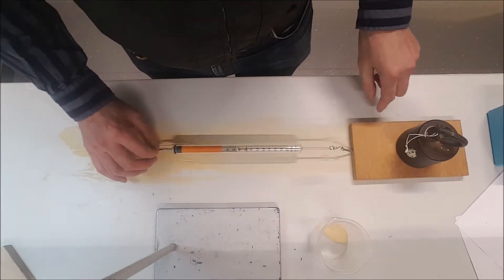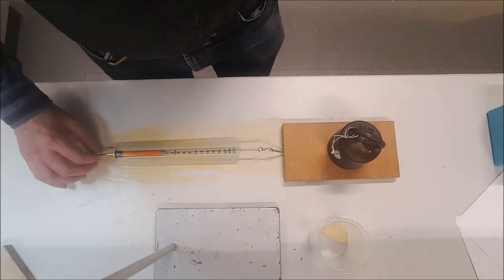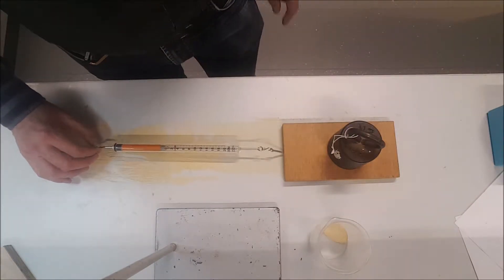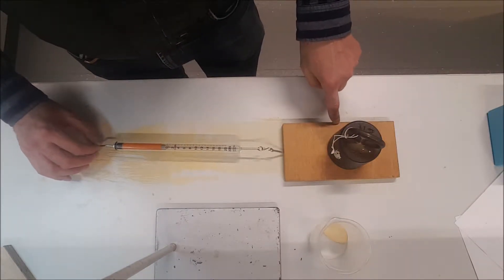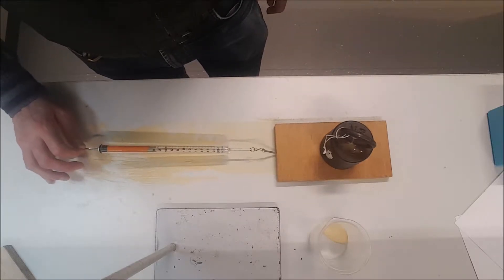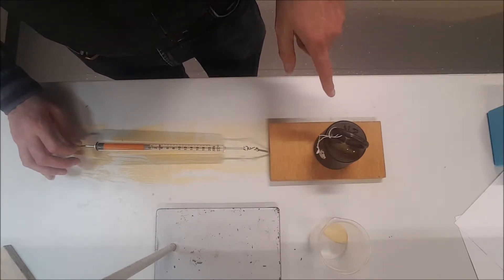Static friction is what you have when this block is not moving and I'm pulling it. It will stand still, it's static, but once it starts moving, it becomes dynamic.